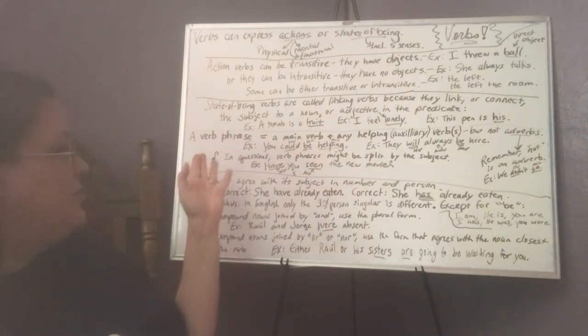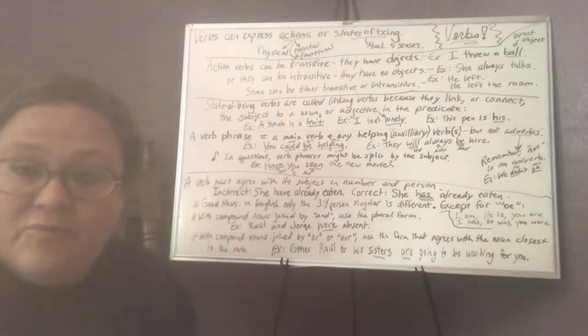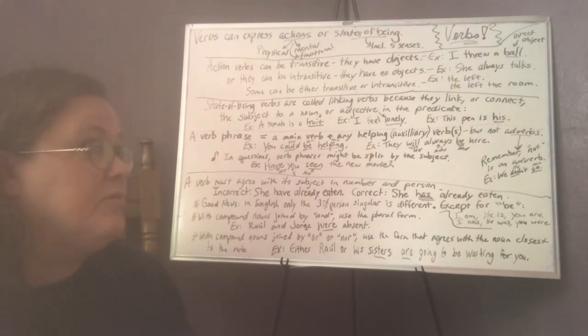And the next thing here says verb phrase. A verb phrase consists of a main verb plus any helping verb or helping verbs that it might have. Helping verbs are also called auxiliary verbs. For example, you could be helping. Helping is the main verb there and could be. Those are also verbs, those two words,